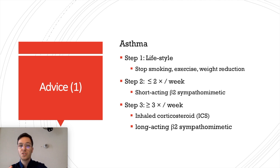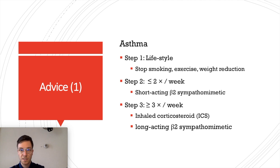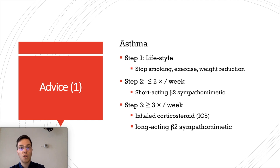Some advice: if you want to prescribe fluticasone for asthma, always use this three-step approach. The first step is lifestyle interventions — stop smoking, do enough exercise, and weight reduction if necessary. If this is insufficient and someone has symptoms more than two times a week, start a short-acting beta-2 sympathomimetic. If still insufficient and someone keeps having more than three episodes a week, start an inhaled corticosteroid like fluticasone, possibly in combination with a long-acting beta-2 sympathomimetic.